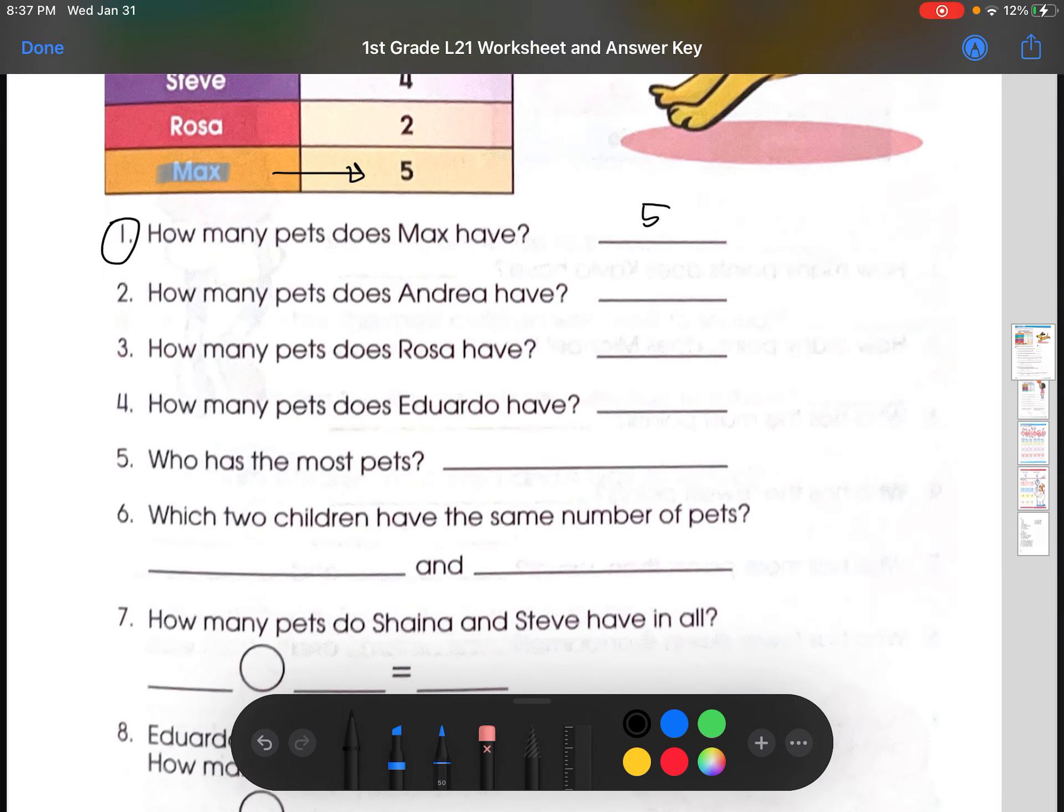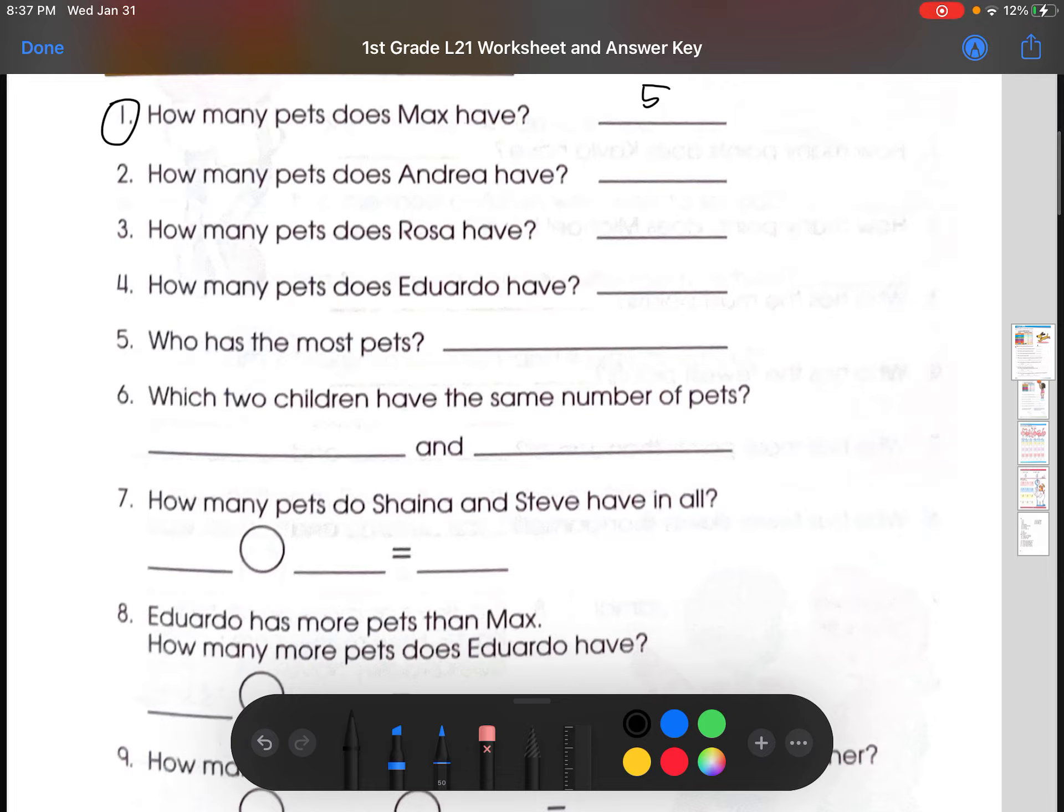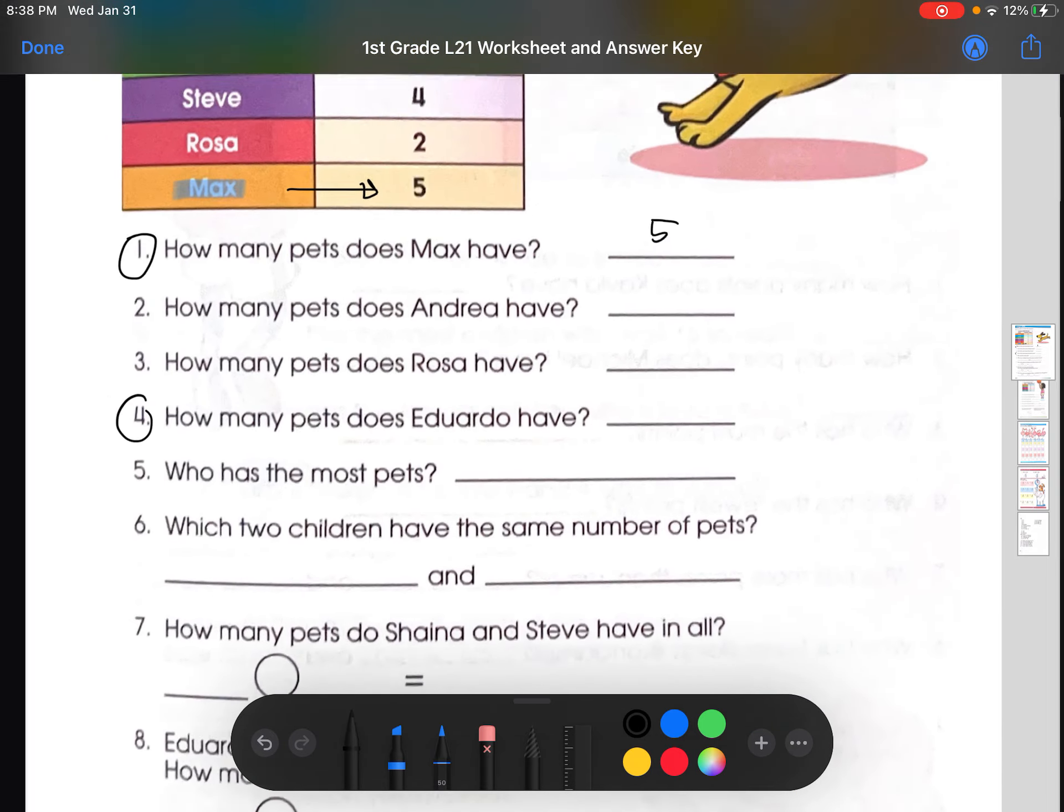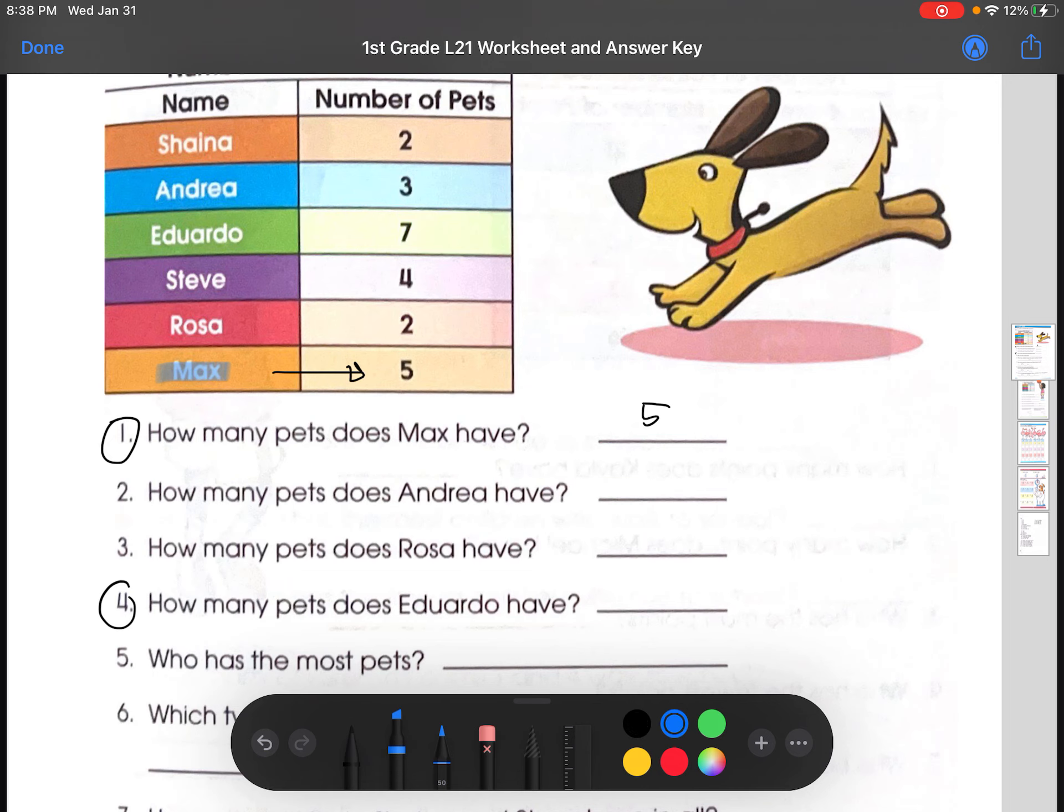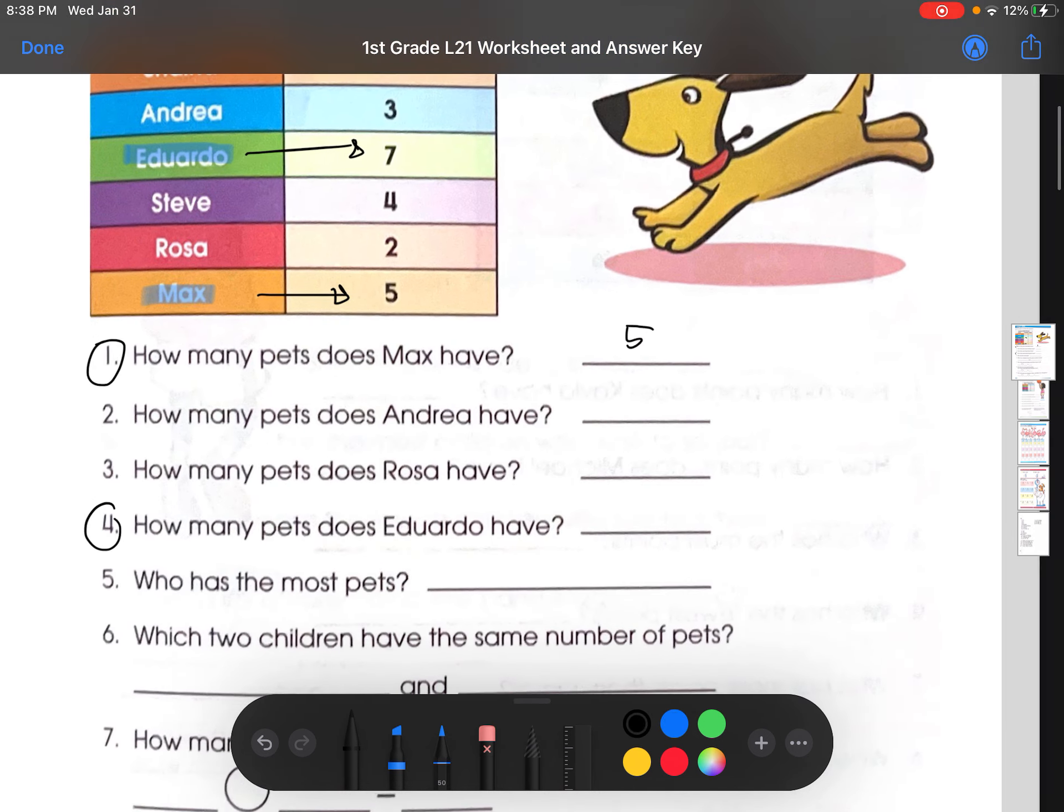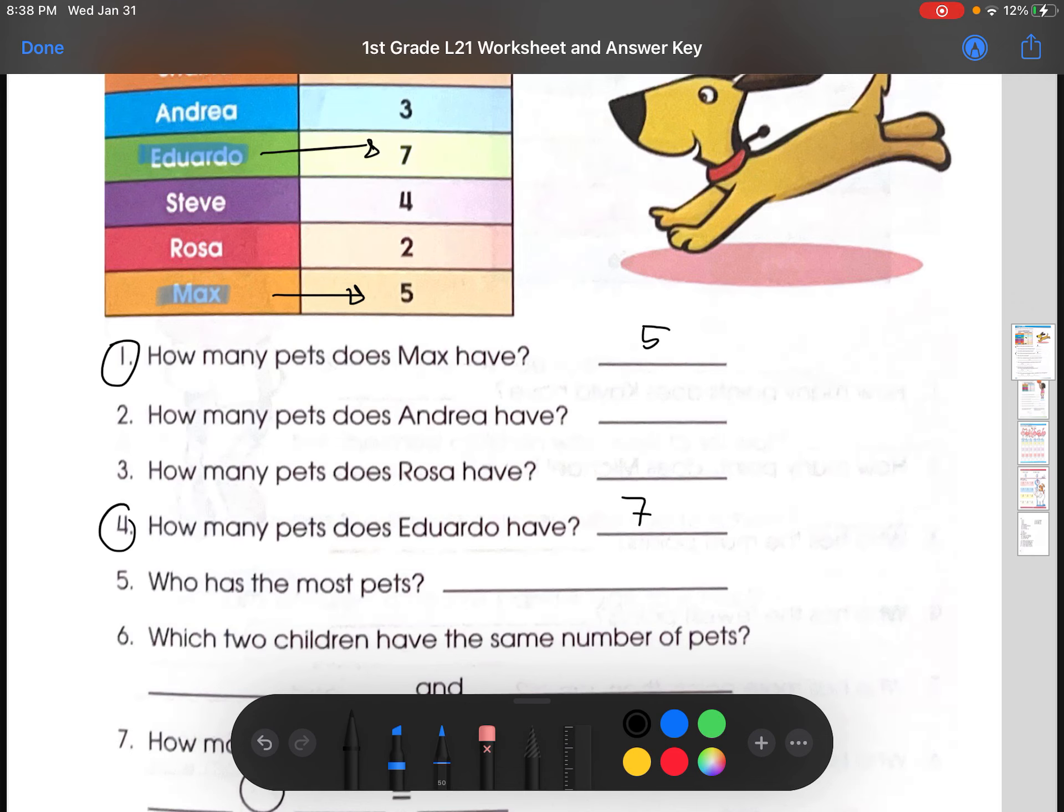Let's do number four. How many pets does Eduardo have? So, again, if we go to names, we find Eduardo. There he is. And the corresponding number right here is seven. So, Eduardo has seven pets.